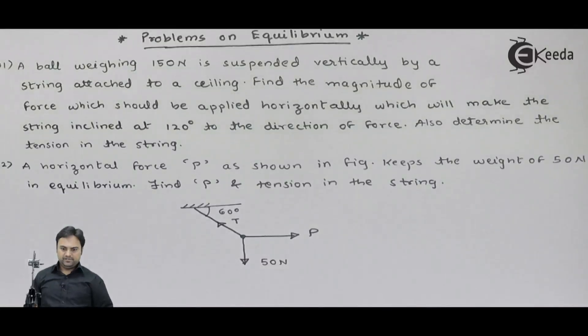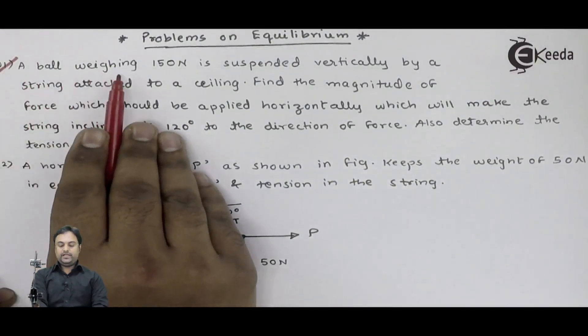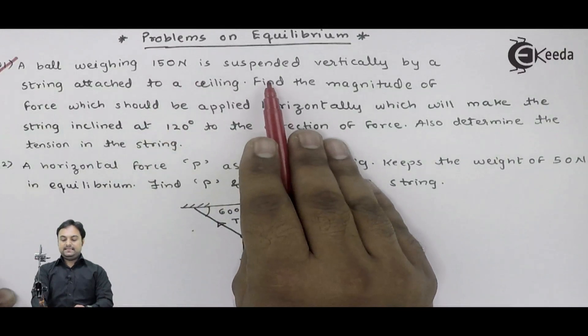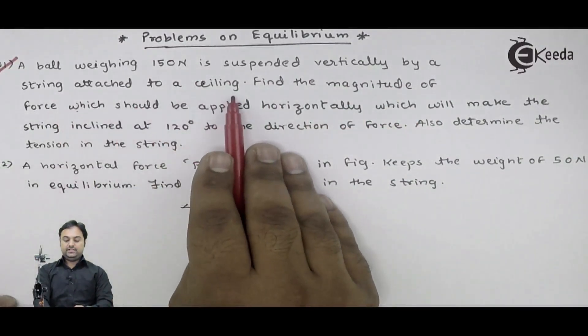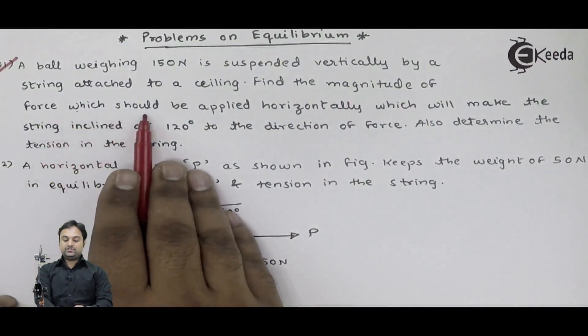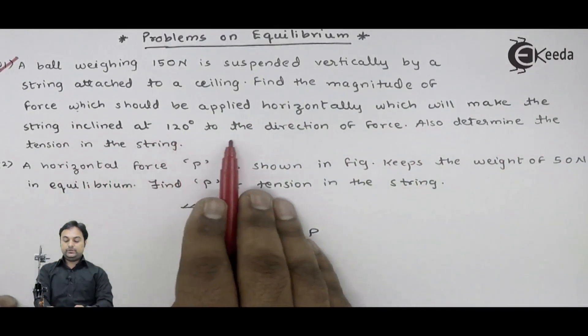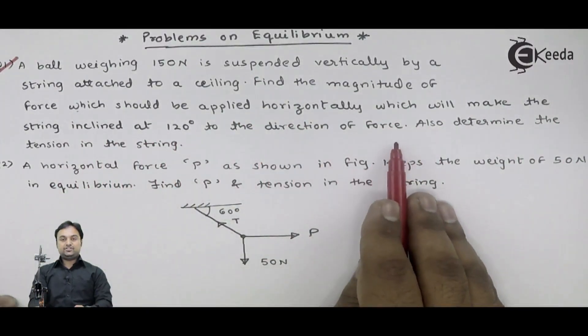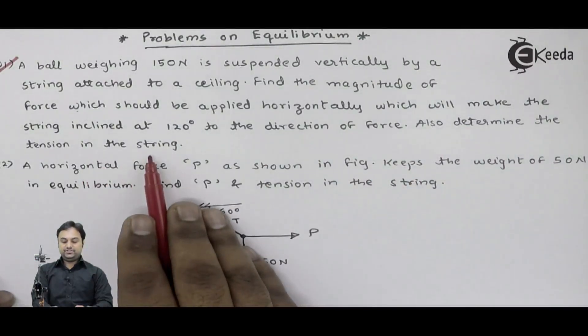Let us take some problems on equilibrium. Let us see what is given here. A ball weighing 150 N is suspended vertically by a string attached to a ceiling. Find the magnitude of force which should be applied horizontally which will make the string inclined at 120 degree to the direction of force. Also determine the tension in the string.